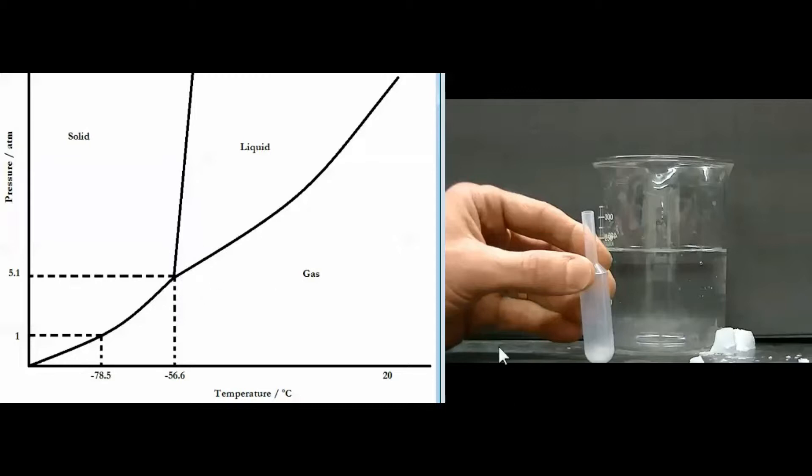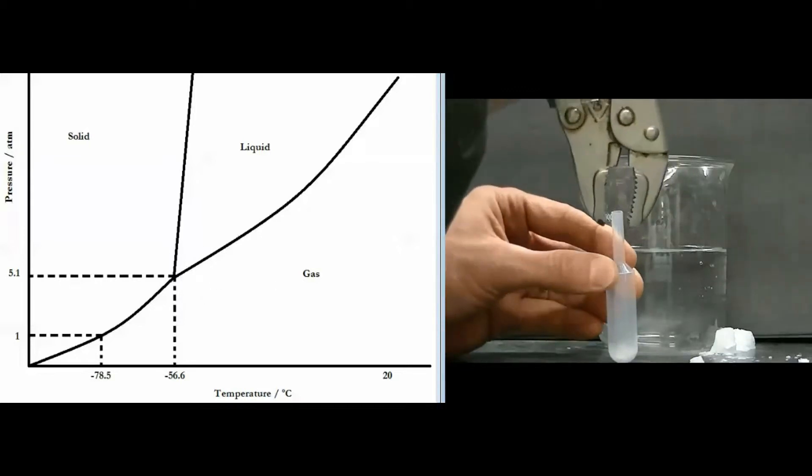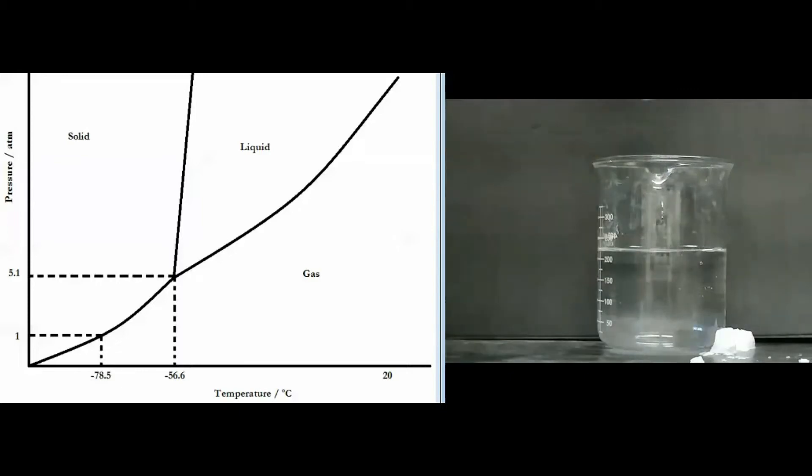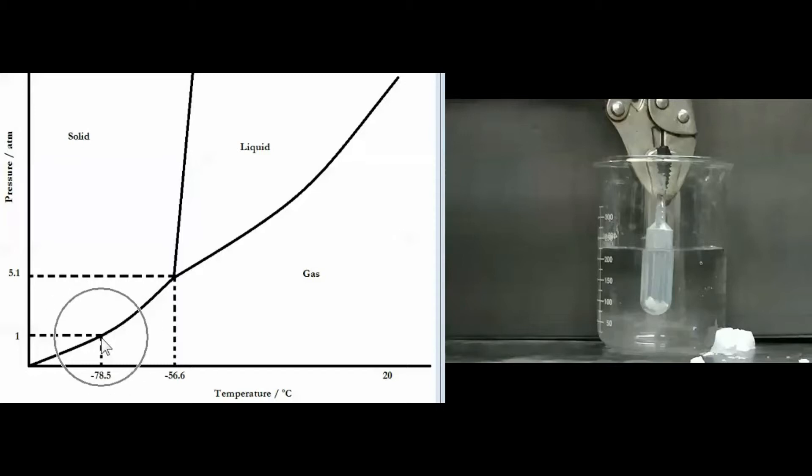So what we did to do that is we clamped the pipette into which dry ice was placed and then we stuck it in some water. Now when that occurred, we probably started with dry ice sitting around here at one atmosphere pressure and minus 78.5 Celsius.